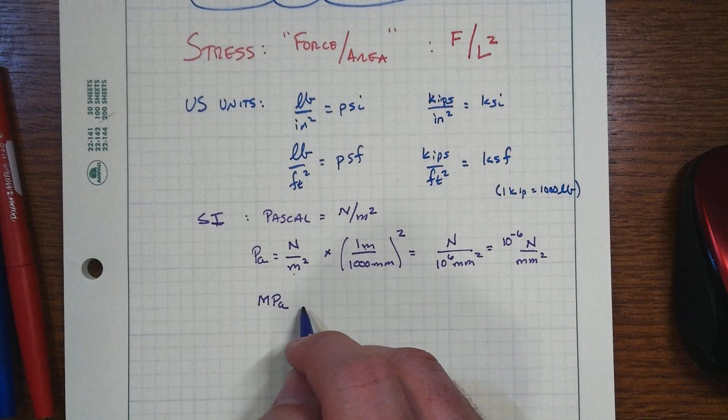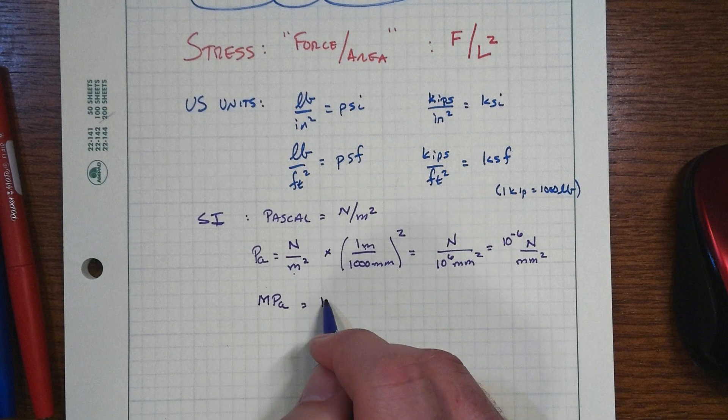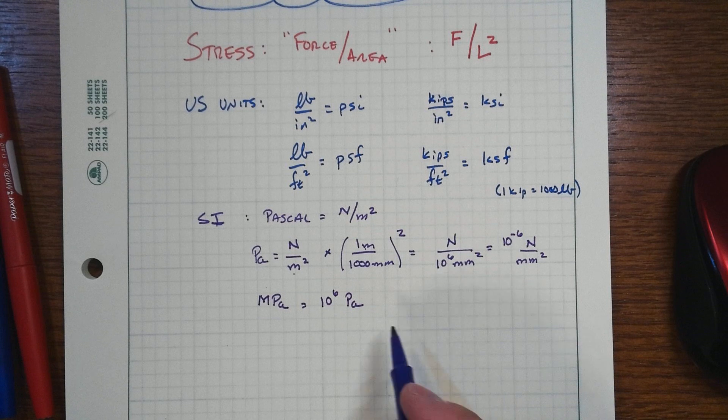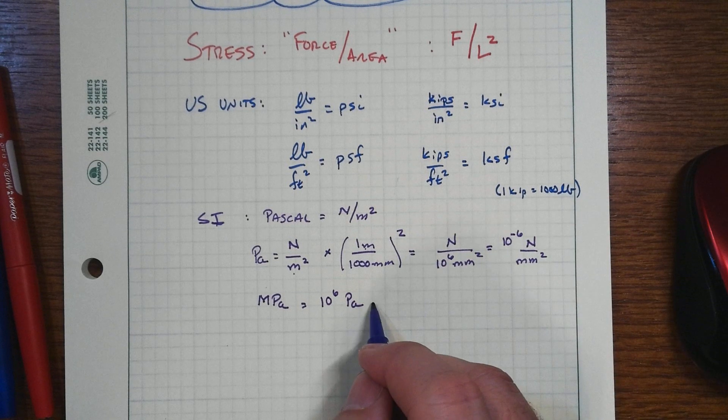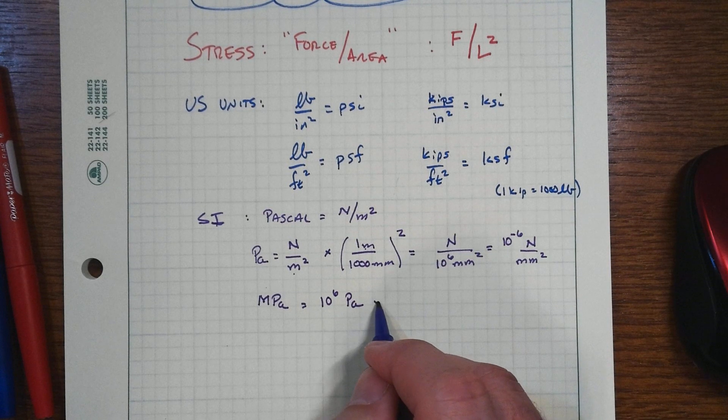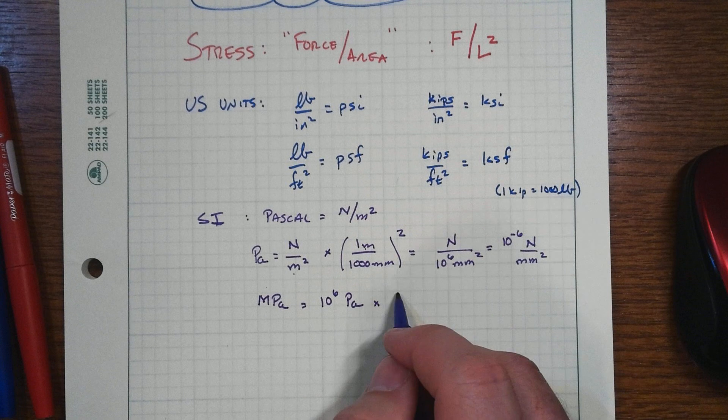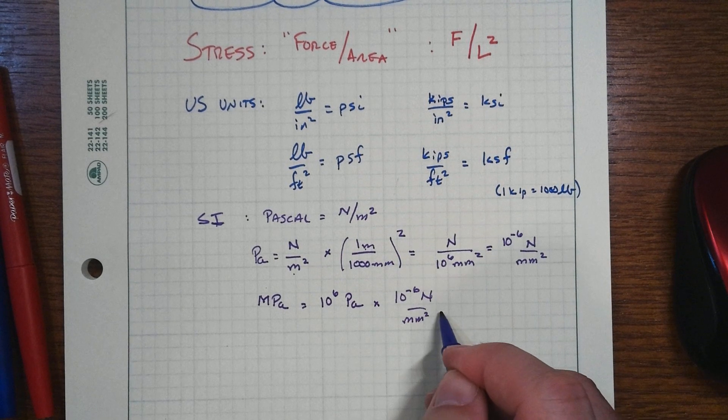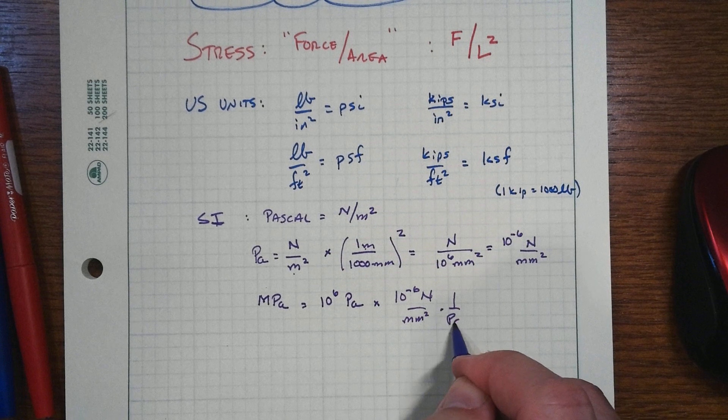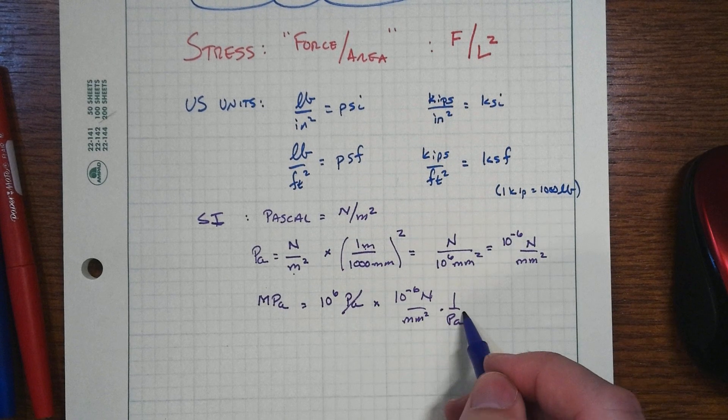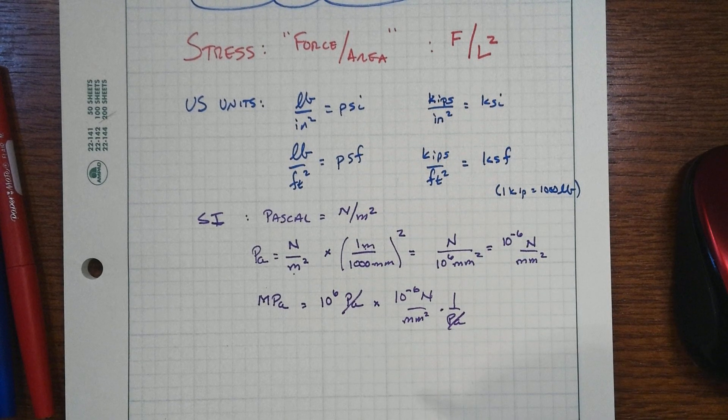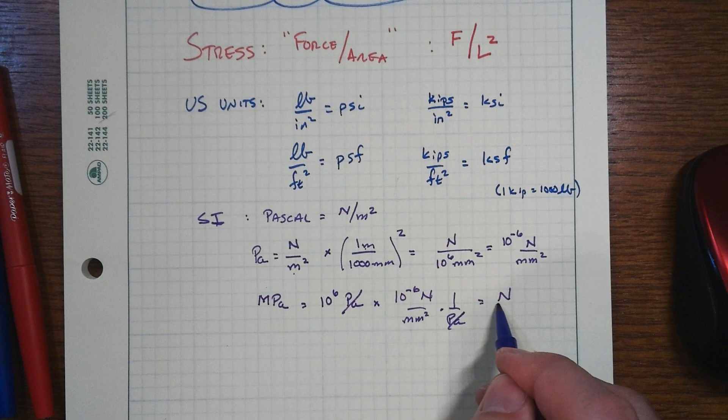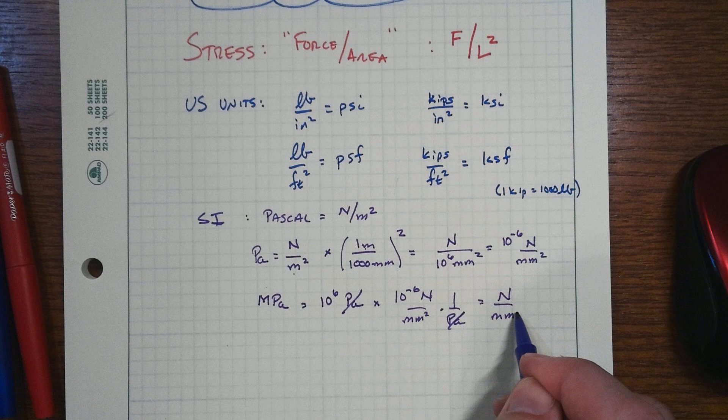A mega is then 10 to the sixth pascals. And since a pascal is the same thing as 10 to the minus sixth newtons over square millimeter per pascal, note, remember, our units can divide through like numbers. And we'll have 10 to the sixth times 10 to the minus sixth. And that's just equal to one newton per square millimeter.